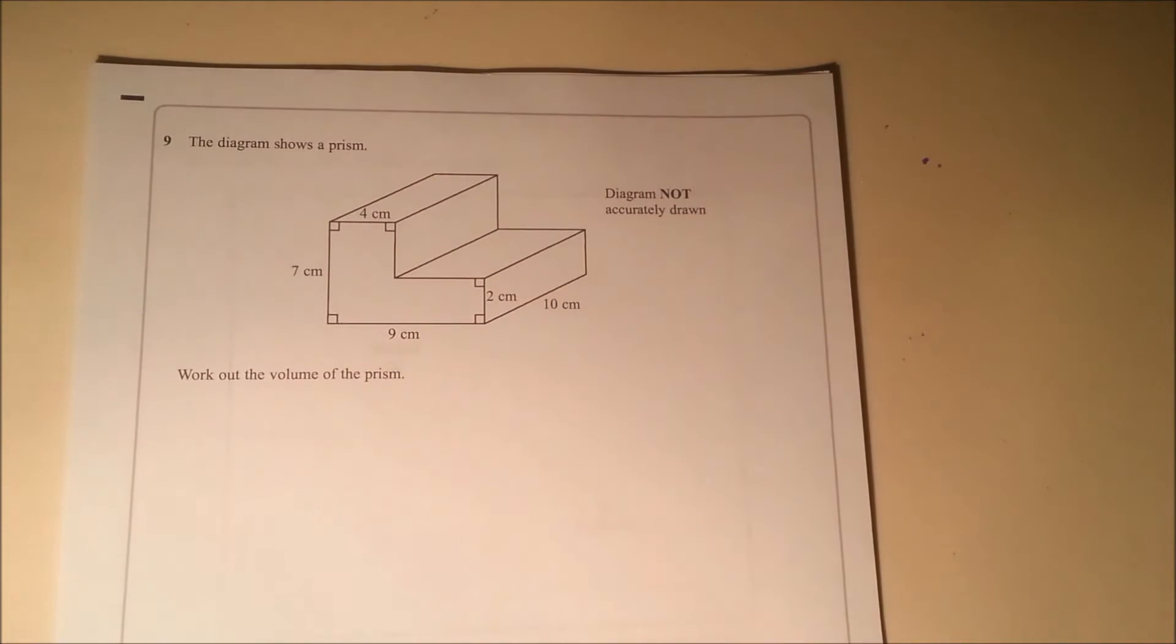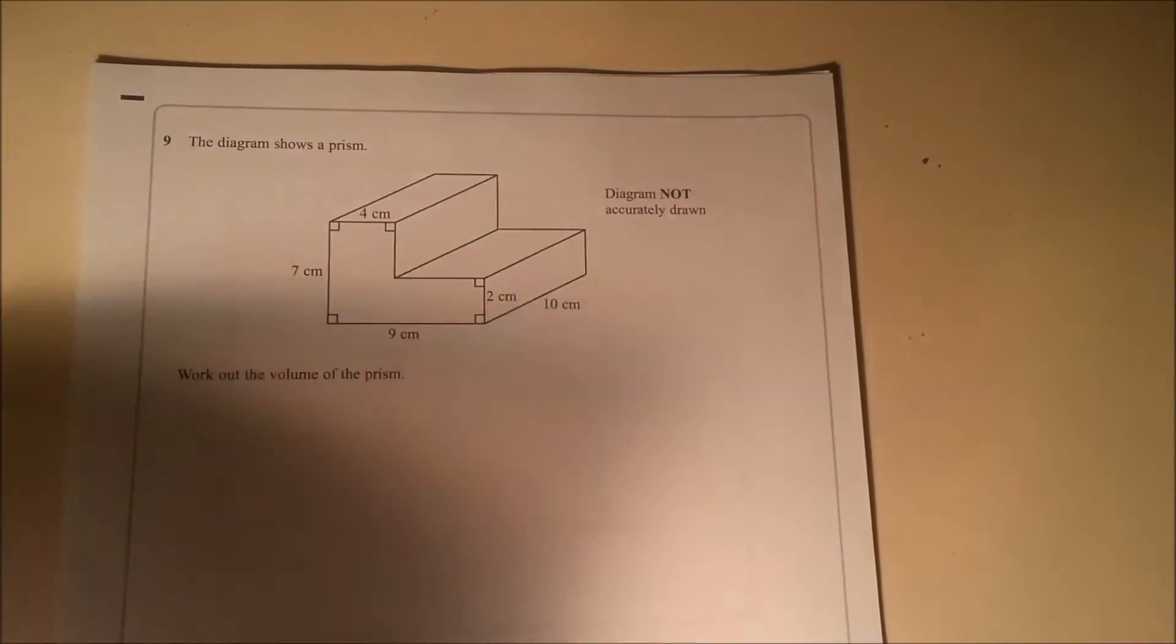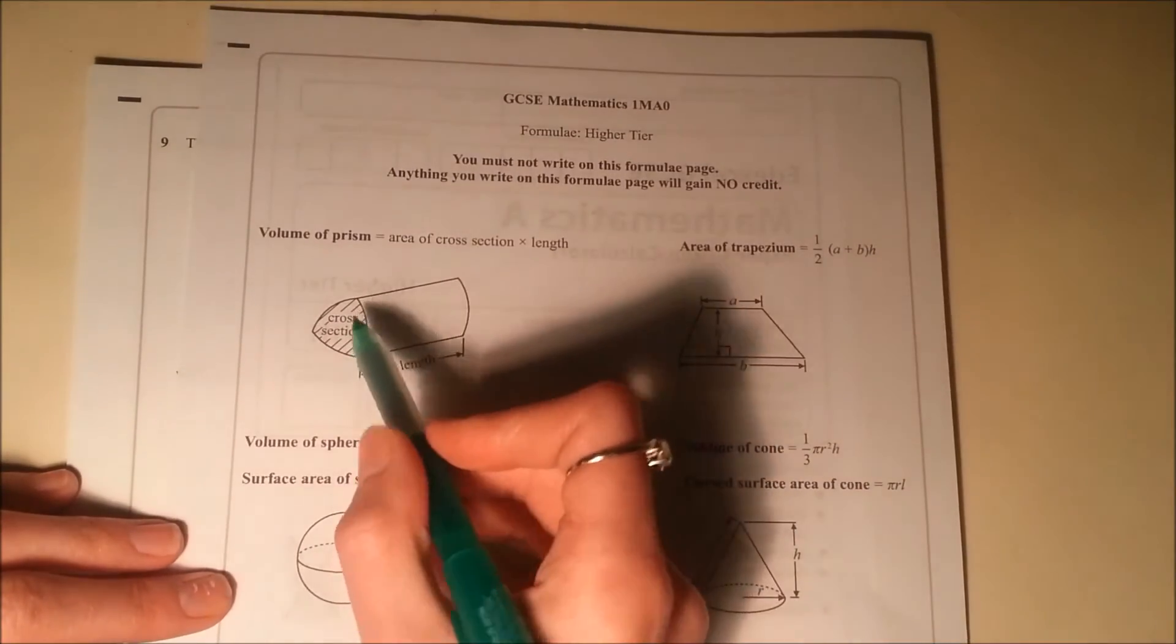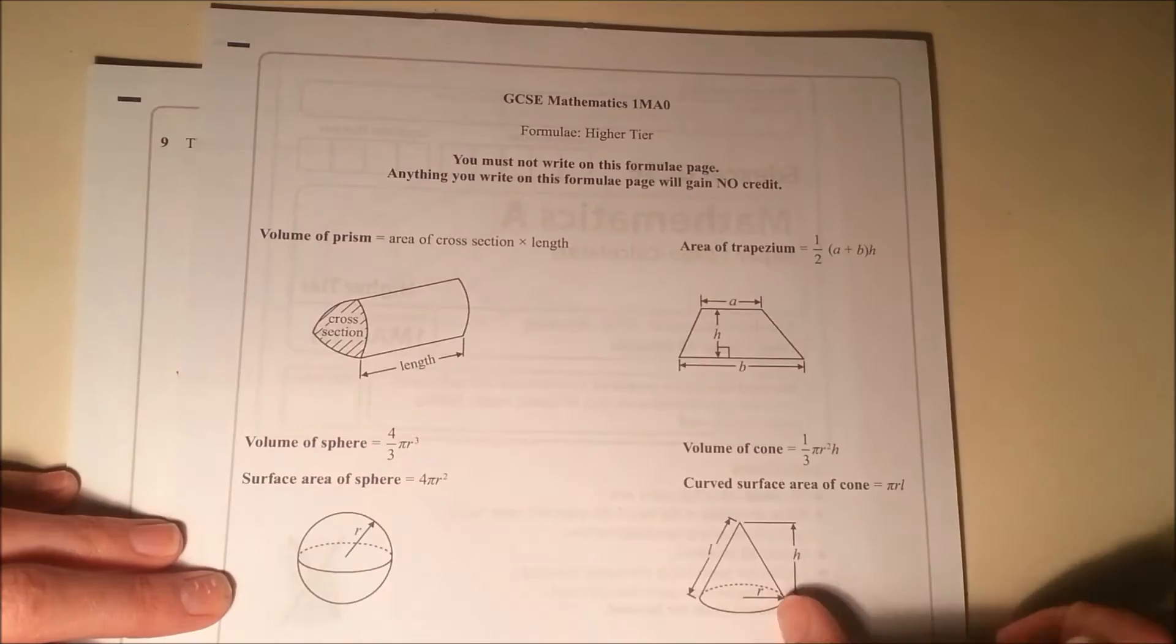Question 9. We've got a prism. Don't forget that the volume of a prism formula is on your formula sheet. So it's the area of the shape on the end multiplied by the length.